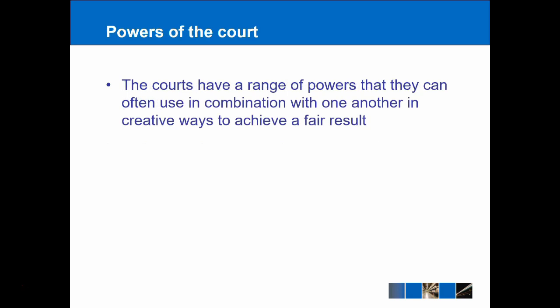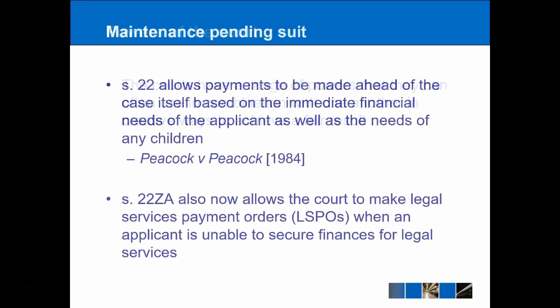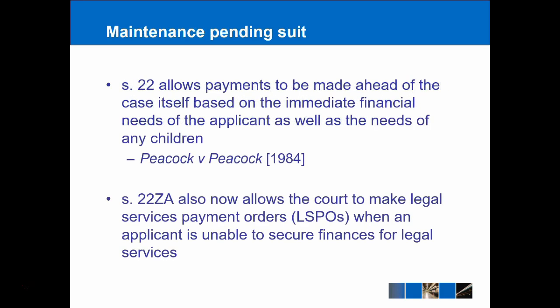So what about the powers of the court themselves — what really are the remedies that are available in these types of cases? Well, the first one we're talking about is maintenance pending suit. This is really just a short term thing before the court makes a final order. It's available under Section 22 and essentially covers any needs or immediate financial interests of the parties before the case is finally decided, in particular focusing on the needs of the children during that time. And so it's a temporary solution to the problem while the case is dragging on, because sometimes they can take months or years to resolve.